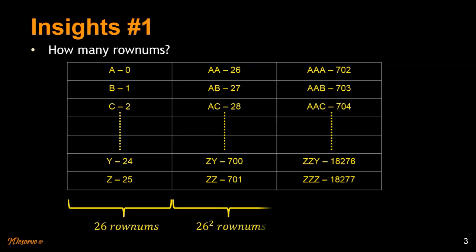For two letter row numbers, we'll have 26 square row numbers. So in total, if you add up 26 plus 26 square, you'll get 702. Since we start from zero, the last element here, last label here is having a row number of 701.